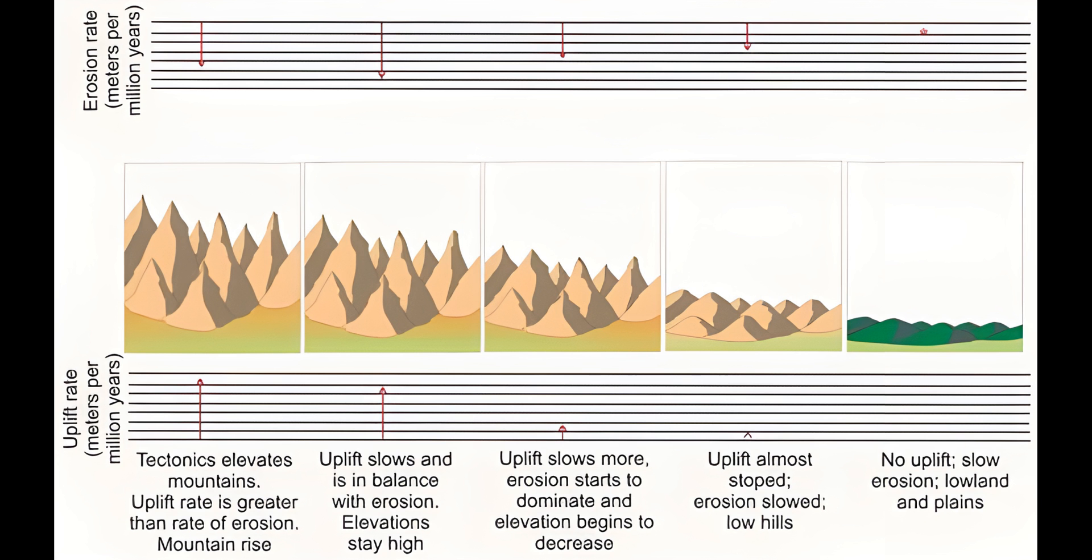In this process, two continents are sutured together and large mountain ranges are produced. The collision of the Indian and Eurasian plates is a good example of the extent to which orogenic uplift can reach. Heavy thrust folding of the Indian plate beneath the Eurasian plate and folding are responsible for the suturing together of the two plates.